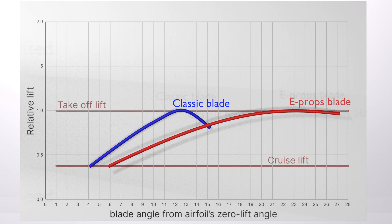The angle of attack range of E-PROPS blades is much wider than that of conventional blades. This results in better performance during takeoff, climb and cruise speed.